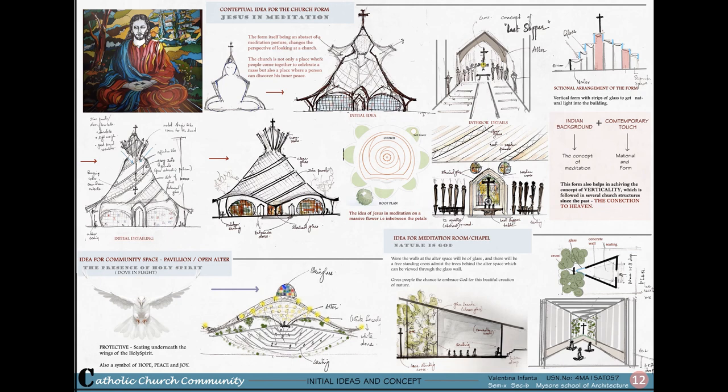For the open gathering, the idea was to have the form of a dove in flight. In Christianity, the dove is considered a symbol of the Holy Spirit. This form represents the presence of the Holy Spirit and gives a feeling of protectiveness, with seatings provided under the wings of the Holy Spirit. The idea for the meditation room is 'nature is God' — a space which is simple and free from all distractions, with the main focus being a freestanding cross amidst natural landscape. The space has a level drop from ground level, is a simple concrete triangular structure with clear glass walls to get in light and draw attention to the cross, and is used for meditation and silent prayer.